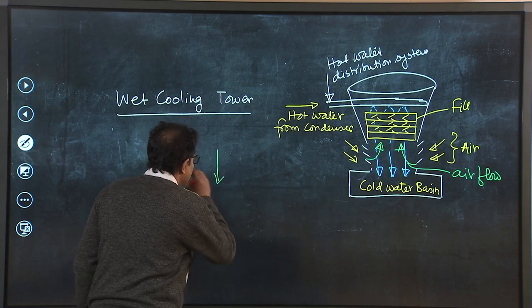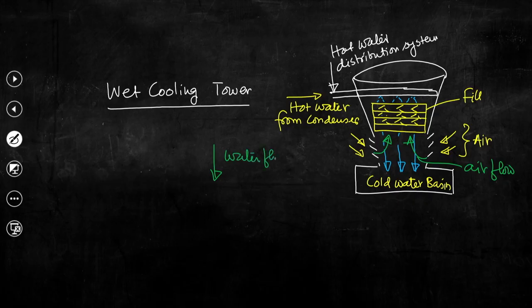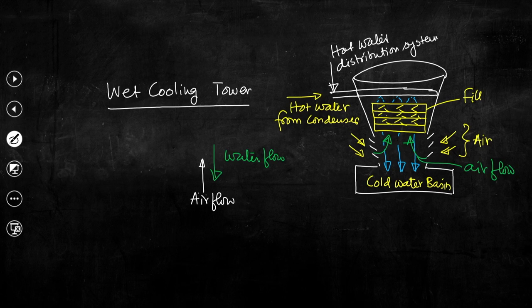Water is coming down and air is going up — this is a counter flow type arrangement. When these two streams mix together, heat and mass transfer takes place. Basically the air which is at ambient temperature will take heat from the water coming down from the top fill to the bottom fill. Heat transfer will take place as well as mass transfer, because when ultimately we get the air from the top of the tower, that air is hot and moist.